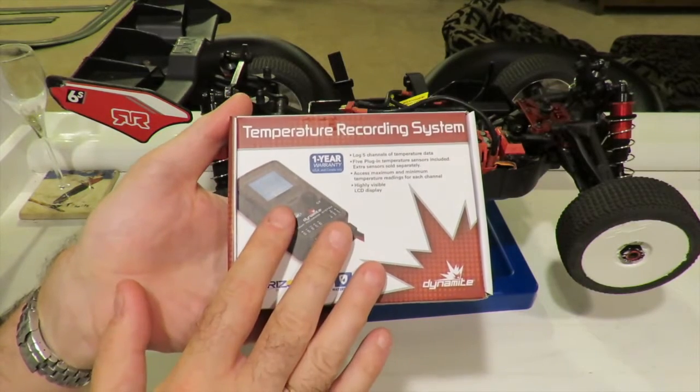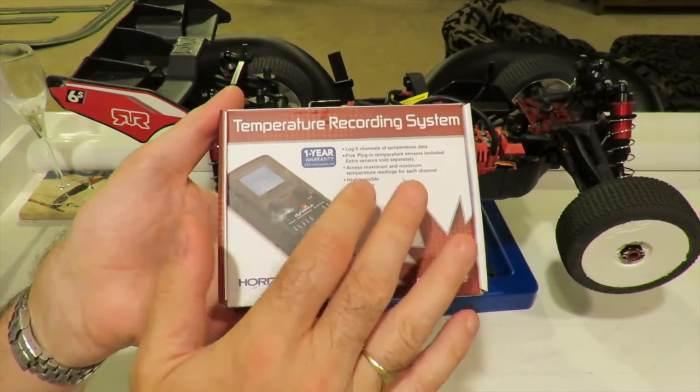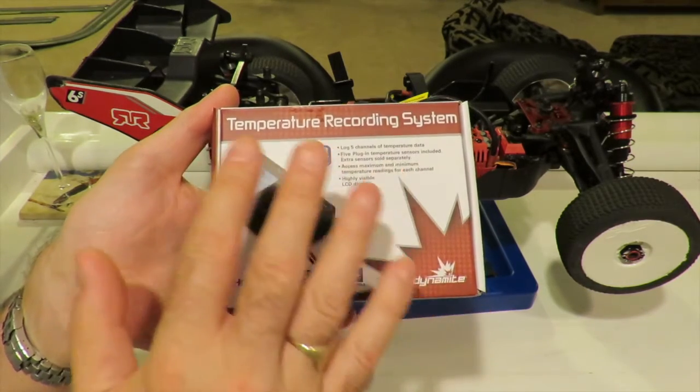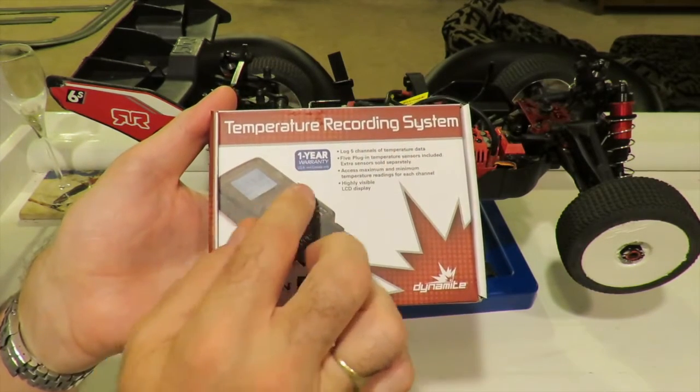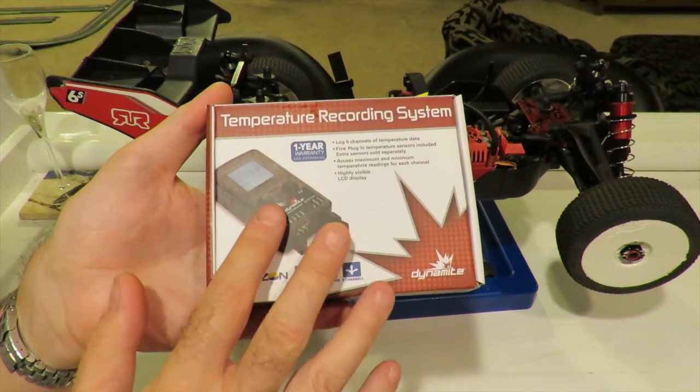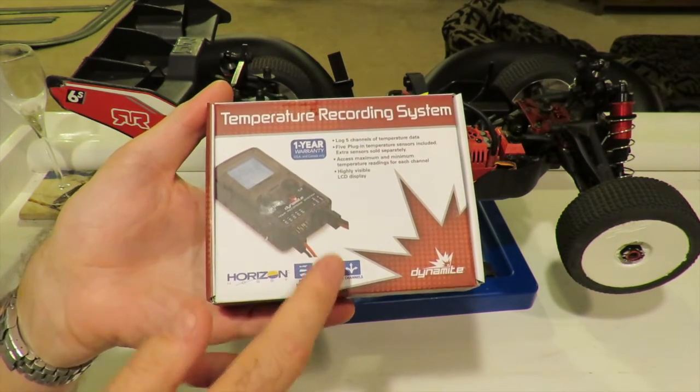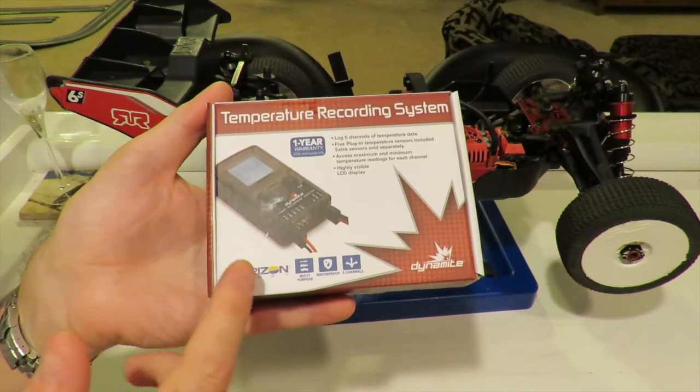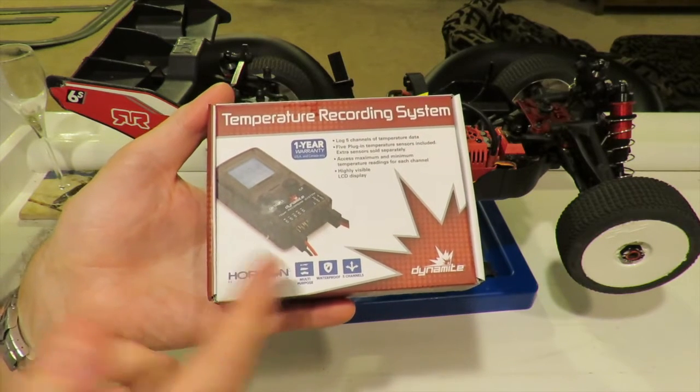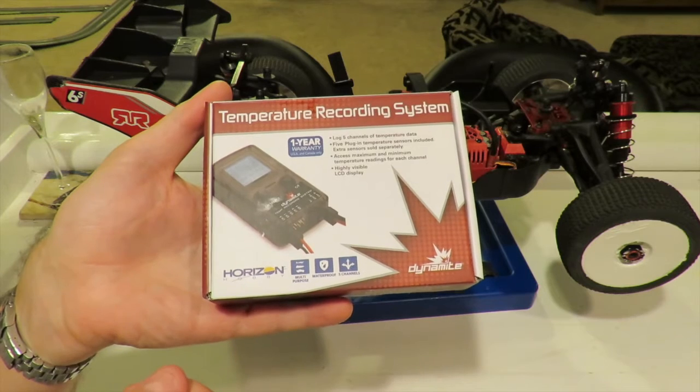How does this differ over a traditional temperature gun? Well this tells you the minimum and the maximum temperatures for all five of those channels that you can scan through using the buttons on here. I'll get the box open and we'll have a look at it in a minute. Fully waterproof, one year warranty which is great. Available from Horizon Hobbies but do like me, buy it through your local hobby store.